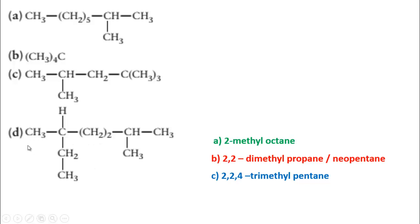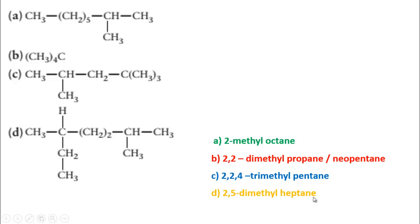Now follow this figure. The longest chain has 7 carbons — heptane. From one side, substitution occurs at the third carbon; from the other side, at the second carbon. So numbering starts from the side giving the lower position value — from the second carbon side. The name is 2,5-dimethylheptane.